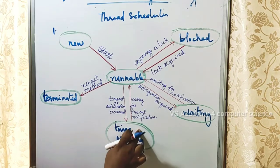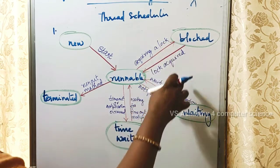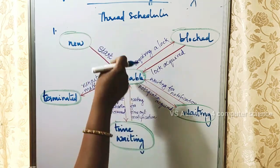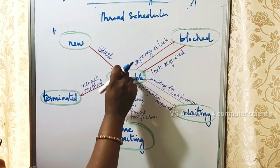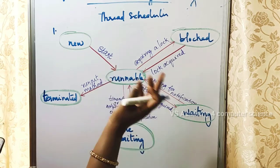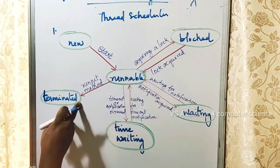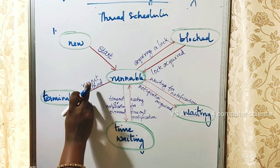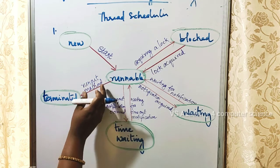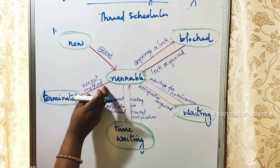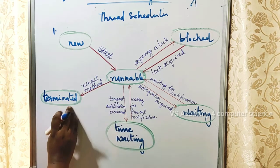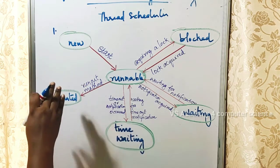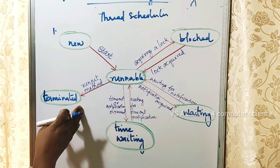The blocked, waiting, and timed-waiting states are all temporary inactive states. Once those conditions are resolved, the thread returns to runnable. If the thread completes its work naturally, it will die — that is the terminated state. When the run method is executed and completes, the thread enters the terminated state.